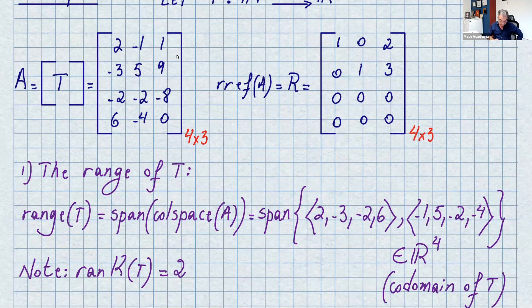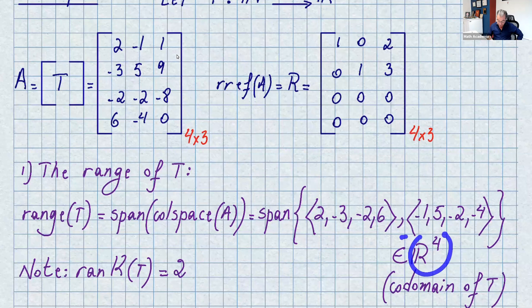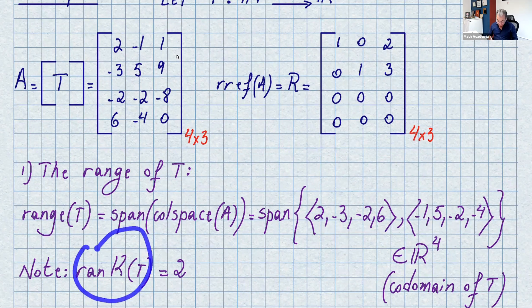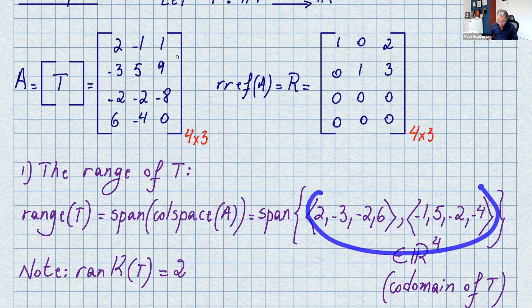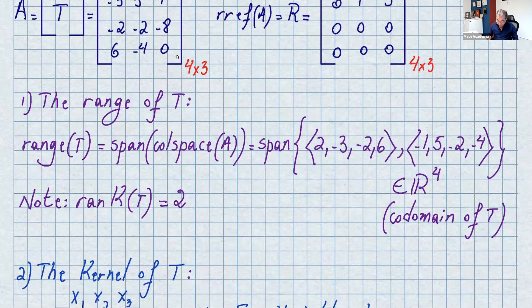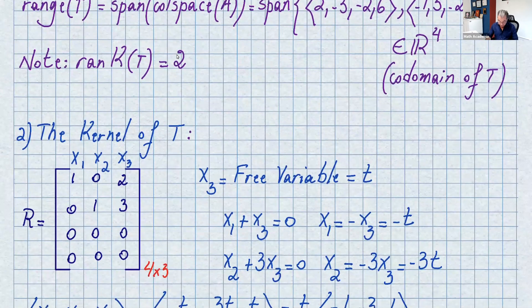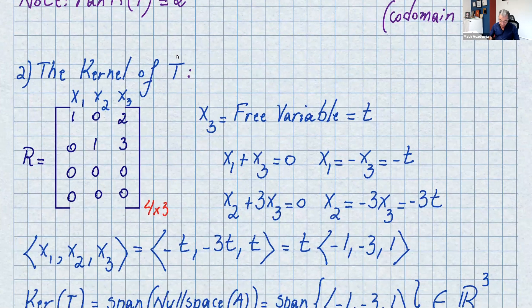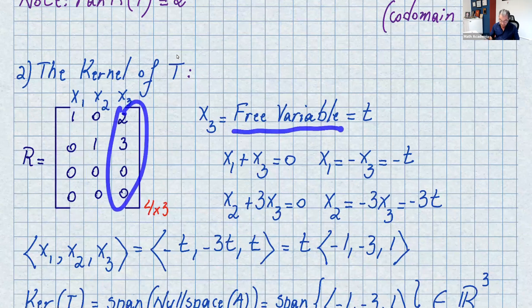The range of the transformation is the span of those two basis vectors, each with four components, so this is in R4. The rank of T equals the number of basis vectors in the column space, which is two. This range is in R4, the co-domain of T. For the kernel of T, we solve the homogeneous system using the RREF: there are two pivot columns and one non-pivot column, so x3 is the free variable.